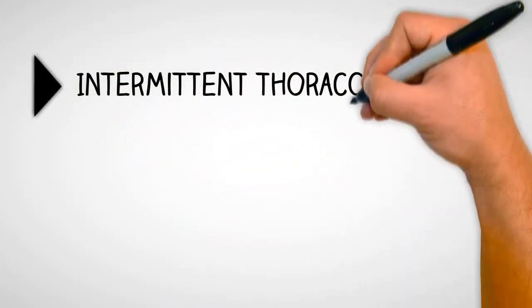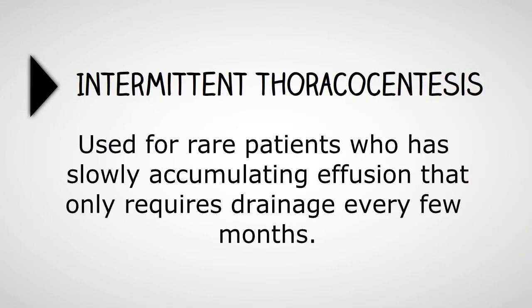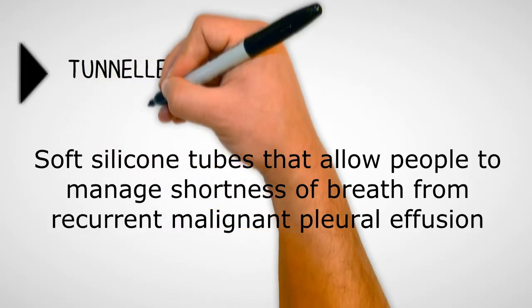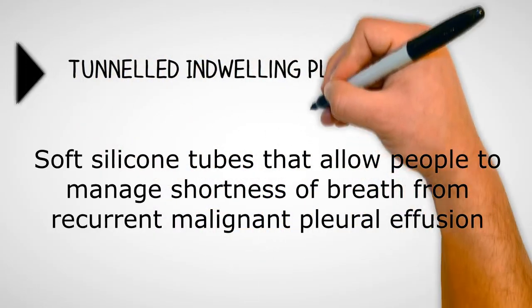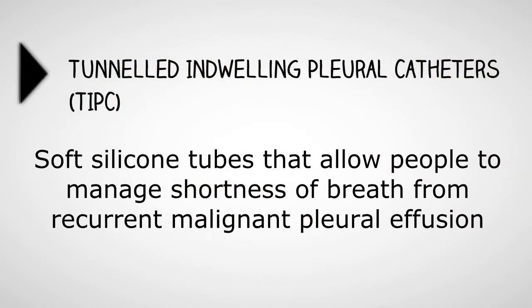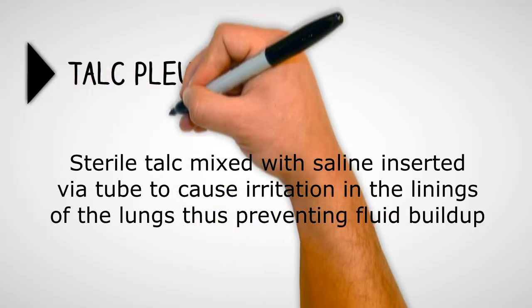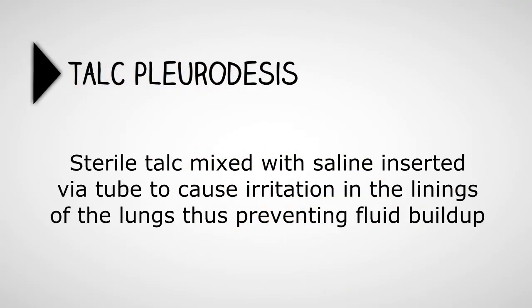Intermittent thoracentesis is used for rare patients who have slowly accumulating effusions that only require drainage every few months. TIPCs are soft silicone tubes that allow people to manage shortness of breath from recurrent malignant pleural effusion. Talc pleurodesis is a sterile talc mixed with saline inserted via tube to cause irritation in the linings of the lungs, thus preventing fluid buildup.